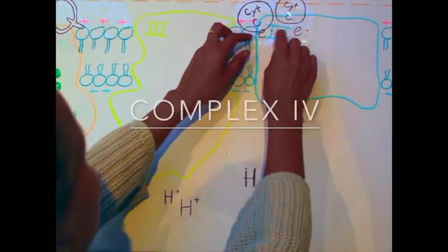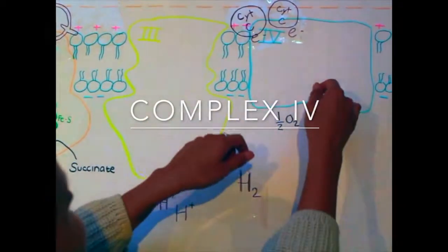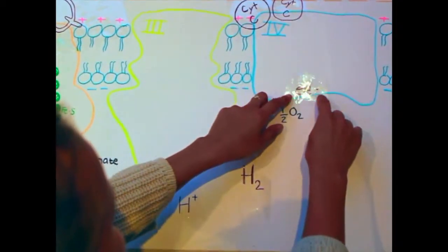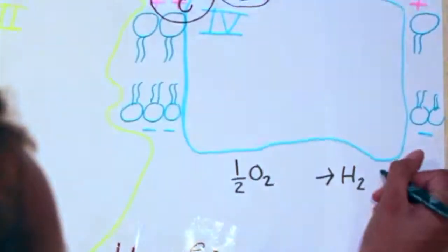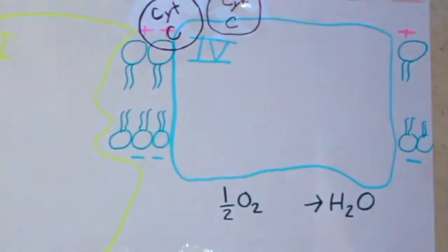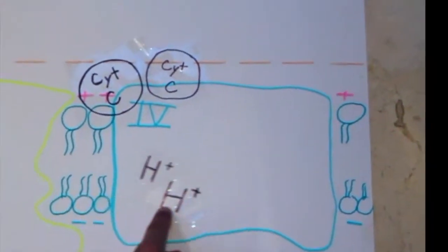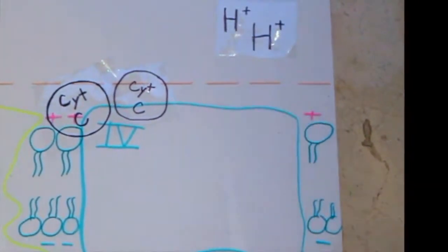The 2 mobile cytochrome C's will bind to complex 4 cytochrome C oxidase. And the oxygen will attract the 2 electrons along with 2 protons to reduce oxygen to H2O. From the matrix, 2 protons will be pumped out into the intermembrane space.